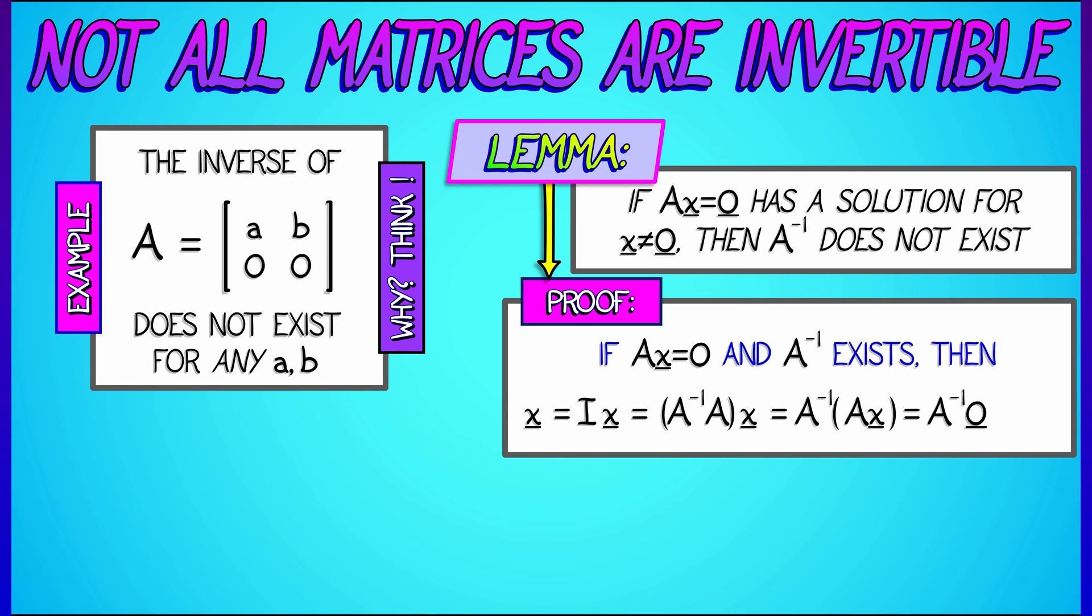And by hypothesis, A times x is 0. So we really have A inverse times 0. And that, of course, is the 0 vector. That means stringing all these together, that x is equal to 0.